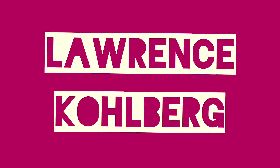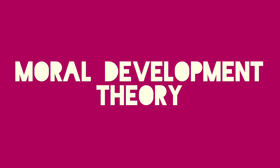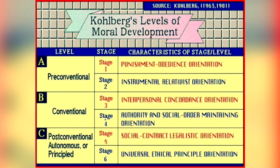Lawrence Kohlberg, an American psychologist and educator known for his theory of moral development. Kohlberg extended Piaget's theory, proposing that moral development is a continual process that occurs throughout the lifespan. His theory outlines six stages of moral development within three different levels.